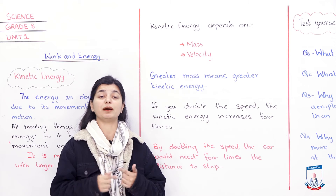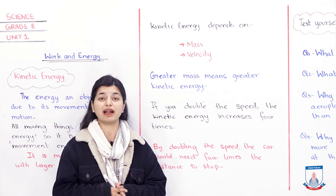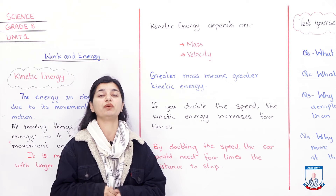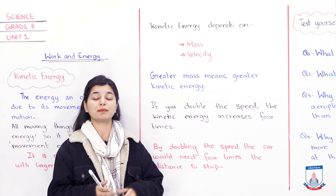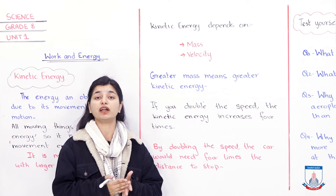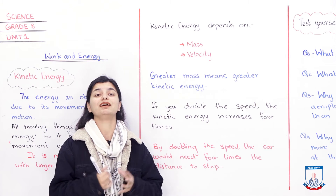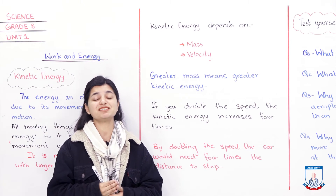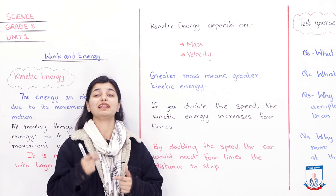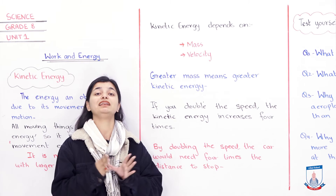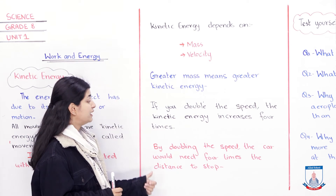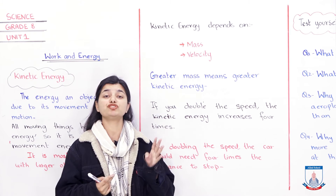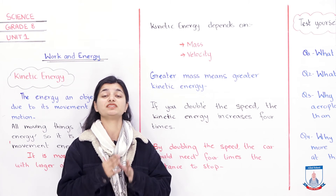When you drive a car and you double the speed, there will be a lot more energy comparatively. To stop it, you will need more time and there will be more distance for the car to slow down. When your speed is more and you hit something, it will cause more damage because there is more kinetic energy in your car due to more velocity. By doubling the speed, the car would need four times the distance to stop.